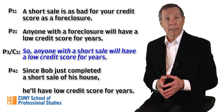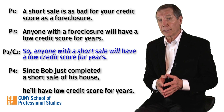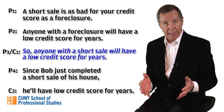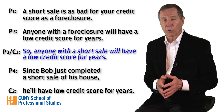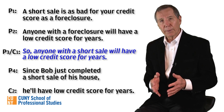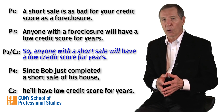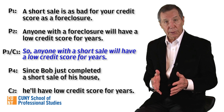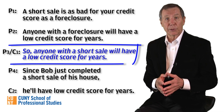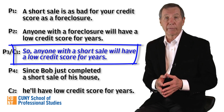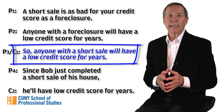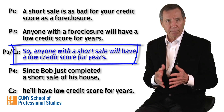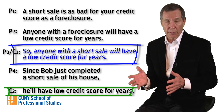Premise four: Bob just completed a short sale of his house. Final conclusion: Bob will have a low credit score for years. Here we have an argument within an argument. The first argument's conclusion is that anyone with a short sale will have a low credit score for years. This sub-conclusion later becomes a premise within the larger argument whose conclusion is C2.